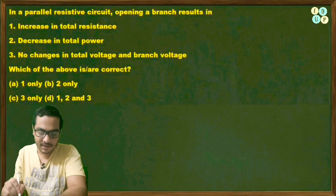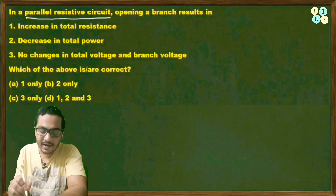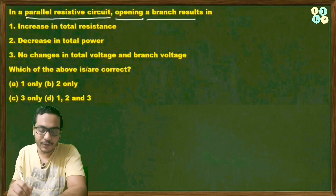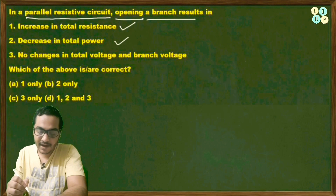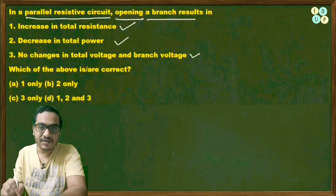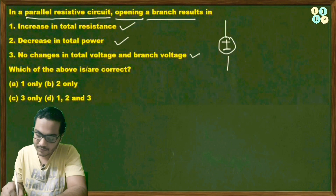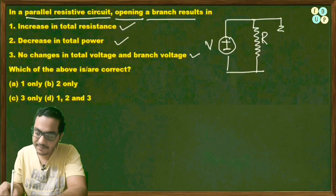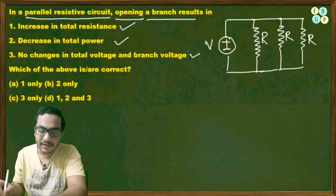The next question is similar: in a parallel resistive circuit, one branch gets open-circuited. Which statements are true? Let's draw a parallel circuit with a voltage source V and three equal resistances R each in parallel. The equivalent resistance is R_eq = R/3.